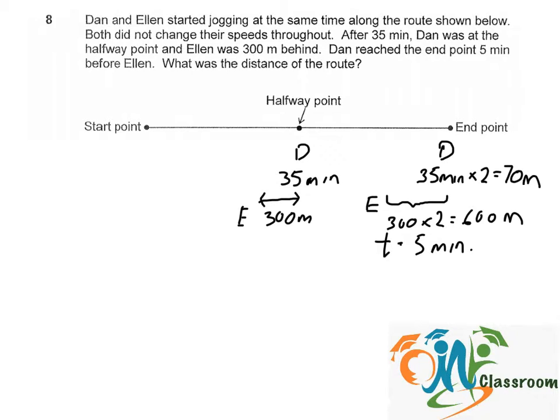With the distance of 600 meters and the time taken of 5 minutes, we can find out the speed of Alan. That will be distance over time, 600 divided by 5, which gives us 120 meters per minute.